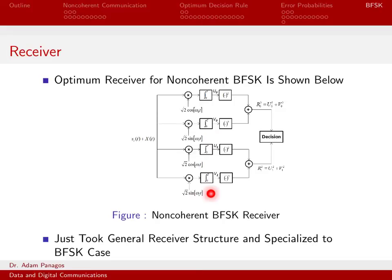Using non-coherent demodulation for BFSK makes practical sense. If tracking the carrier is difficult, it's going to be tough as you're constantly toggling between frequencies. Every time the transmitter switches frequencies, your phase lock loop has to adjust and retrack the new carrier. So using a non-coherent scheme to demodulate a system jumping around in frequency a lot is definitely a practical approach.